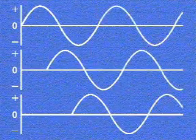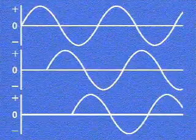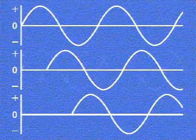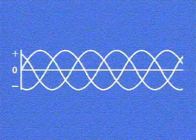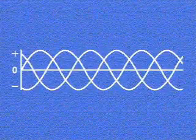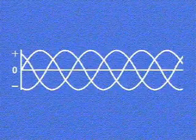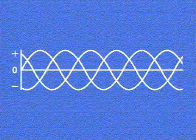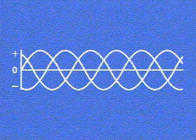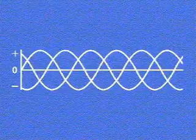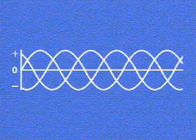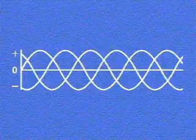As rotation continues, each of the three phases produces alternating positive and negative current that is constantly changing. Here's how the three output voltages look on a single graph. We can see that because each of the three phases produces a voltage, the total output is never zero. This means that a three phase generator is more efficient than a single phase generator of similar size.